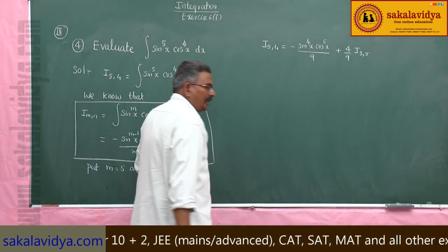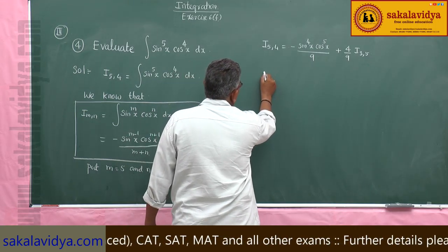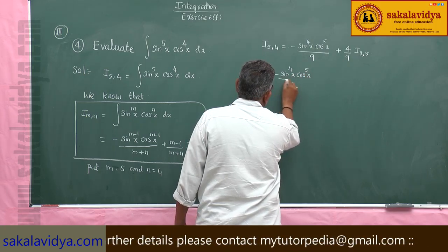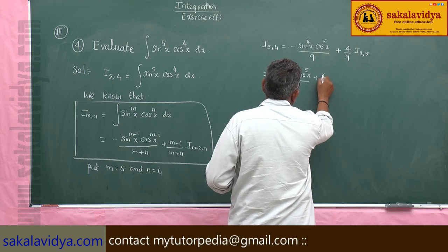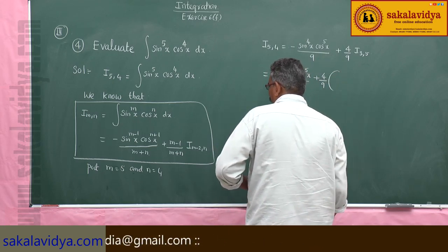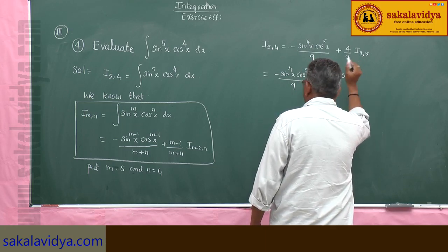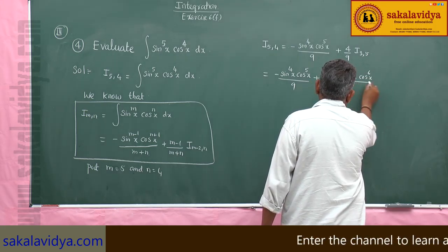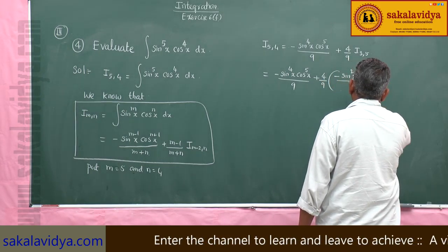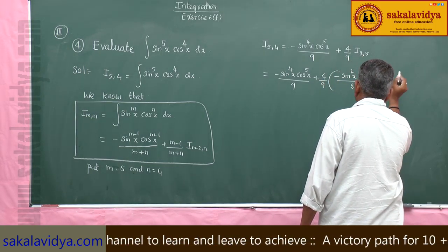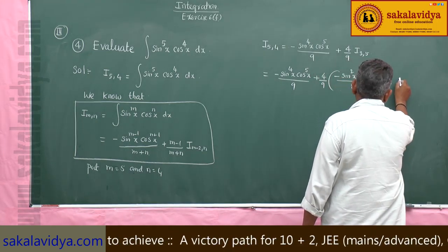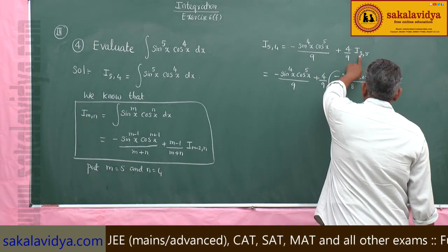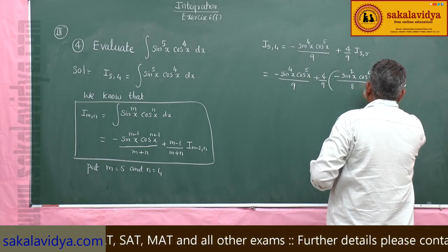We need to find I(3,5). Applying the formula again: this equals minus sin x to the power of 4, cos x to the power of 5, over 9, plus 4 over 9 times, minus sin squared x cos x to the power of 6, over 8, plus m minus 1 which is 2 over 8, times I(m−2) which gives I(1, 5).